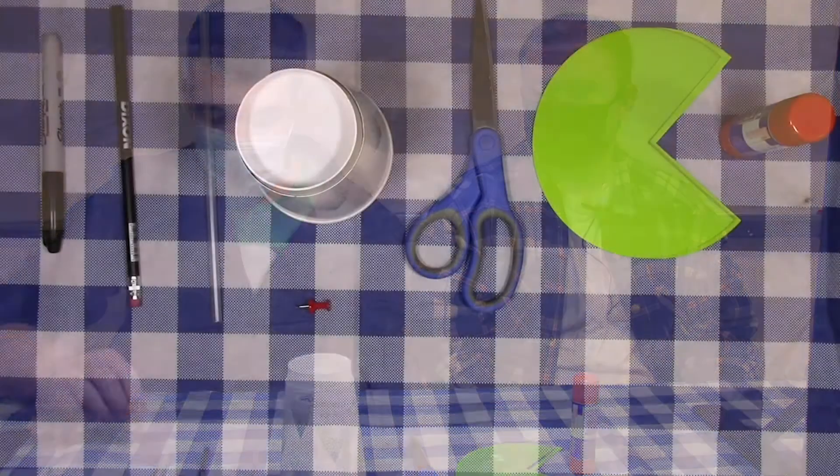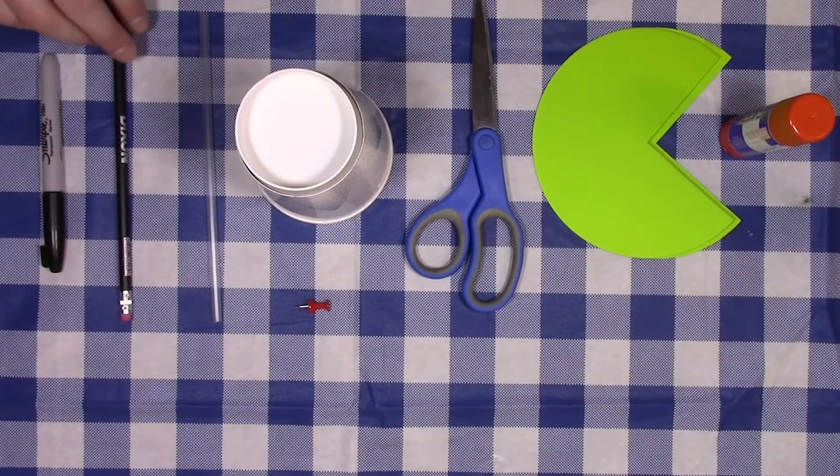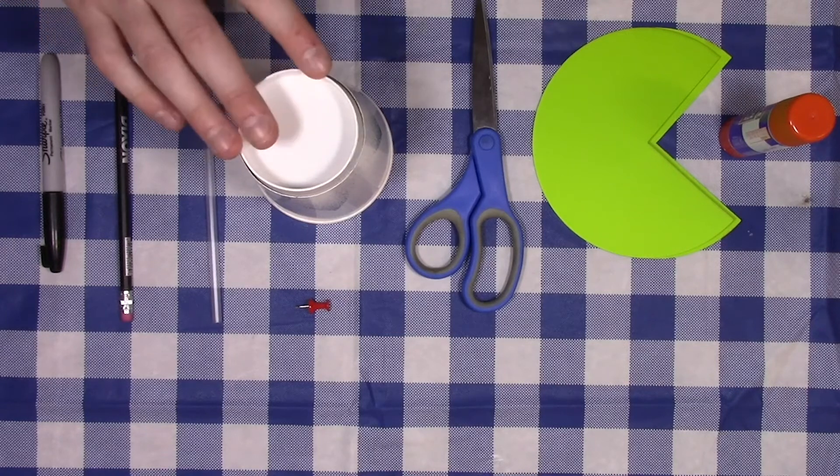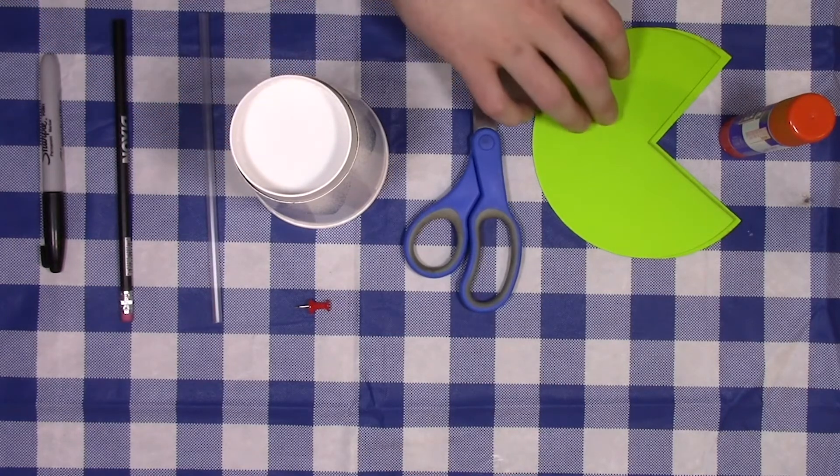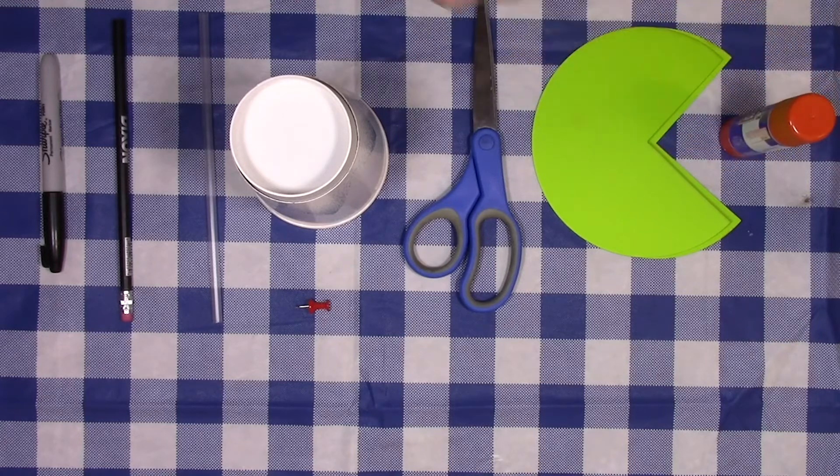Today we're going to show you how to make a wind vane. To build our wind vane, what we're going to need is a Sharpie, pencil, a straw, a paper cup, scissors, construction paper, and optionally glue.